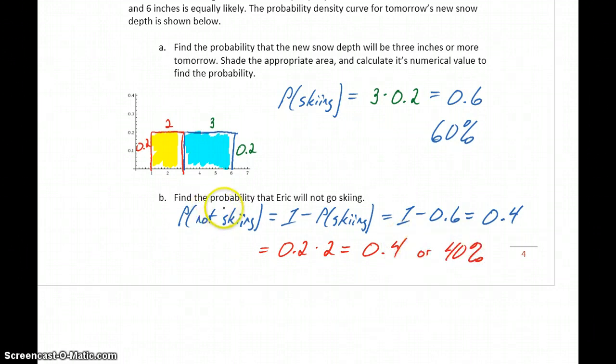So whichever way we calculate that using that rule that we established for complements or going back to the graph and recalculating that probability we come up with the same result. He has a 60% chance of going skiing a 40% chance of not going skiing.